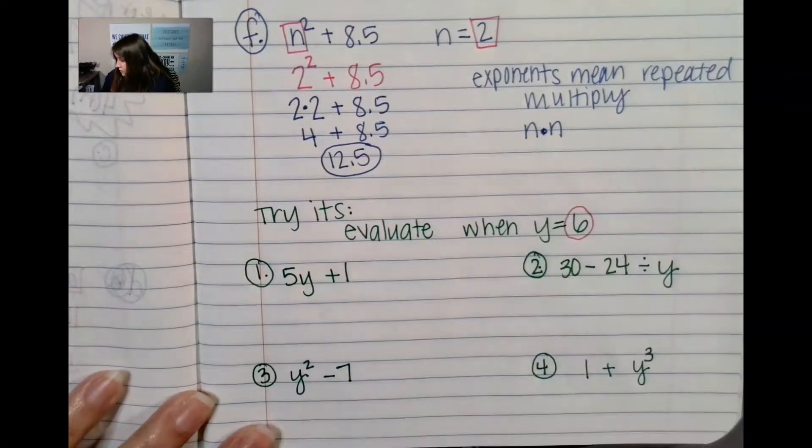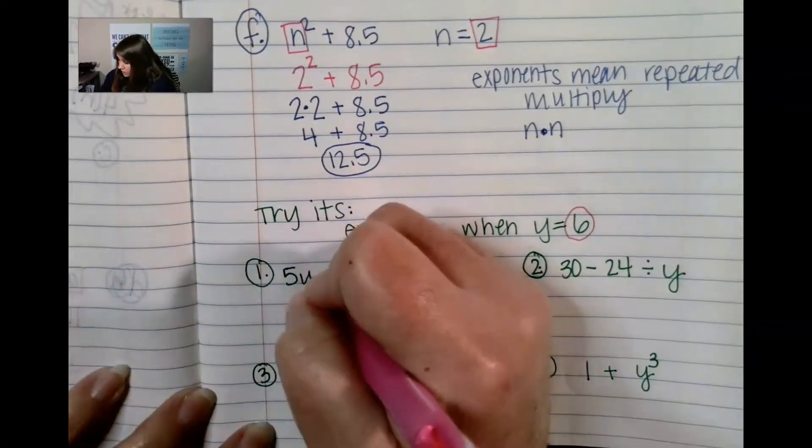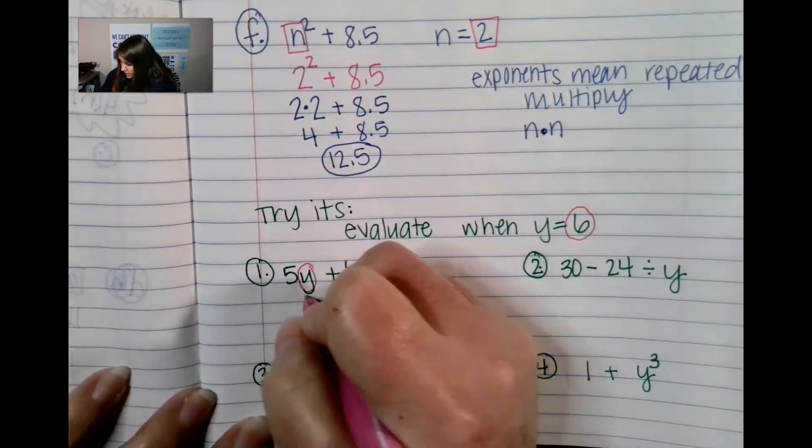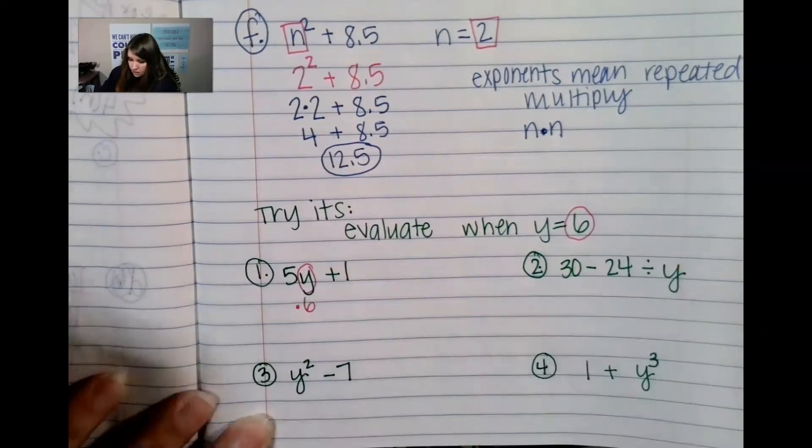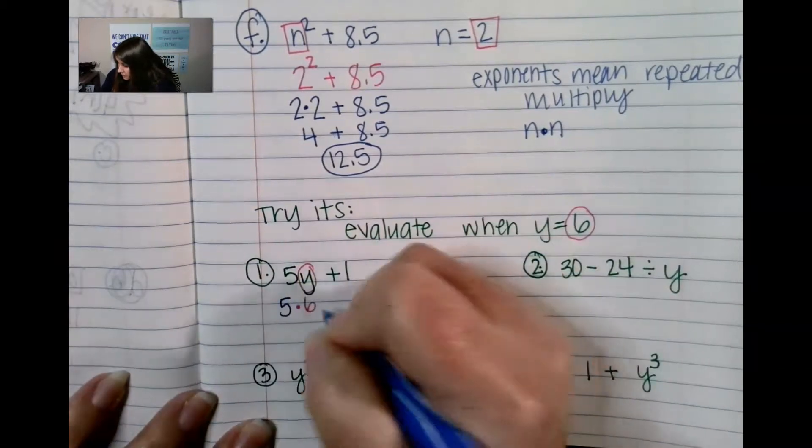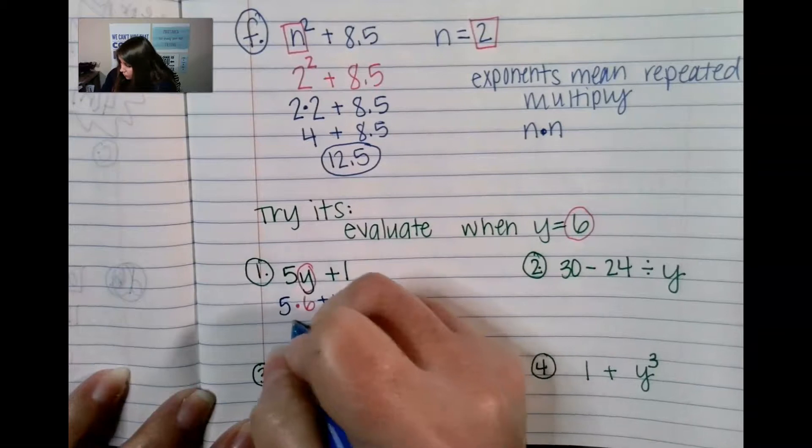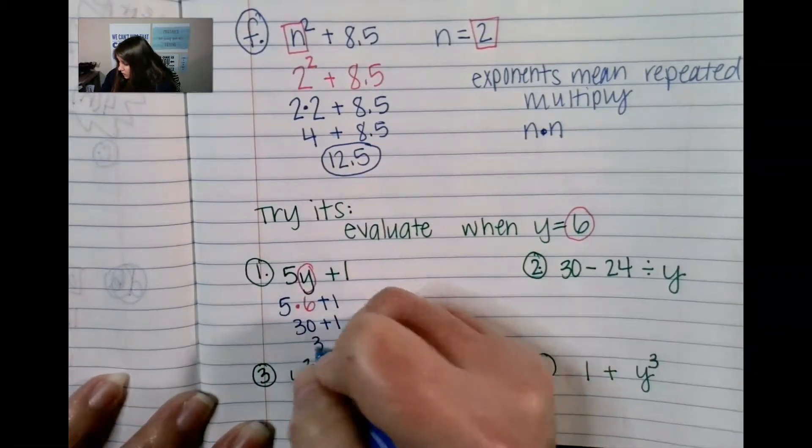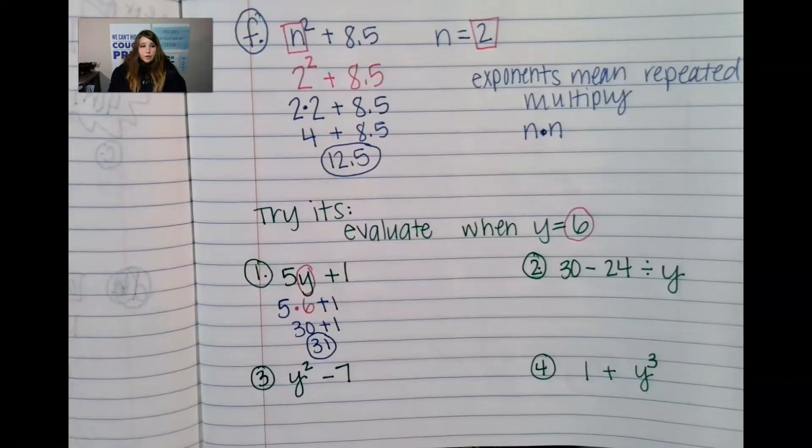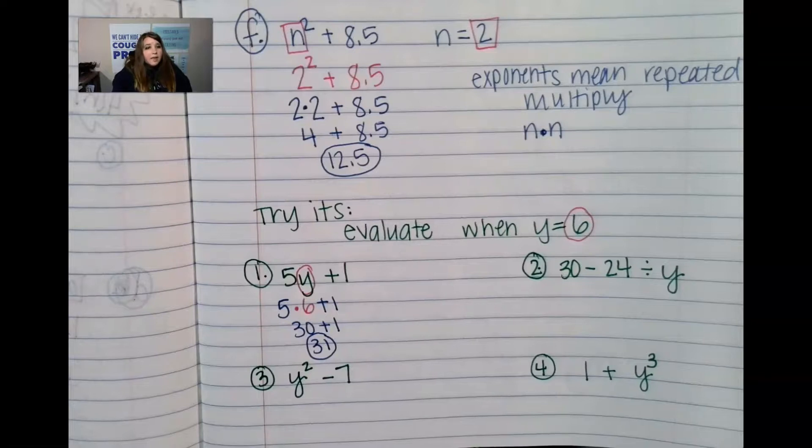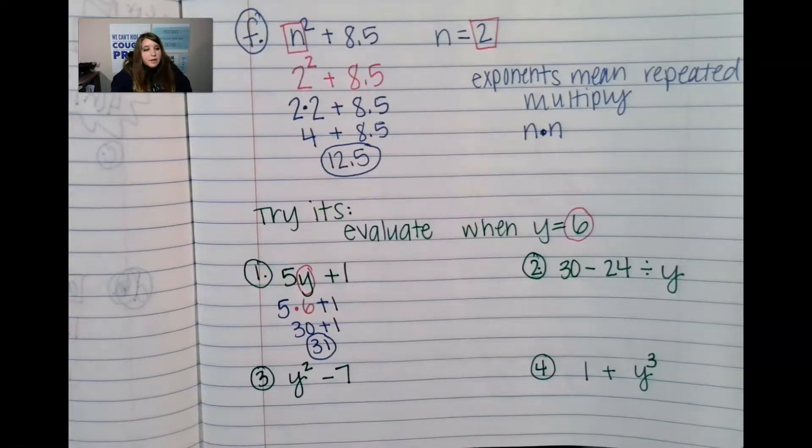All right. So, I know that y equals 6. So, I have a y here. And so, this is like saying 5 times 6 plus 1 which is 30 plus 1 which is 31. So, that's 31. How did you do on that problem? Go ahead and check yourself. How did you do?